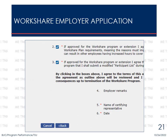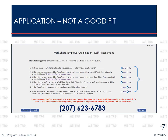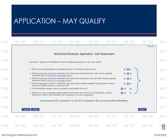During this process, at various points there are opportunities to Cancel or Go Back. Cancel will discontinue the application process and return you to the Home screen. Back will take you back one screen, which may be useful for making changes or corrections. Use these buttons with care, but they are there if you need them. Based on the answers you provided, one of two messages will appear. If you answered Yes to any of the first four questions, or No to questions 5 or 6, then WorkShare may not be a good fit for you. If you have questions regarding your potential eligibility, please call 207-623-6783. If you answered No to questions 1–4 and Yes to questions 5 and 6, you may qualify for WorkShare. Select Next to continue.